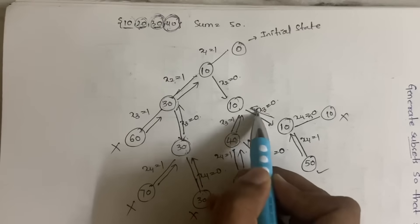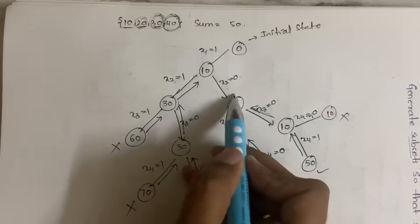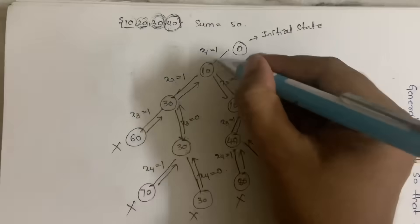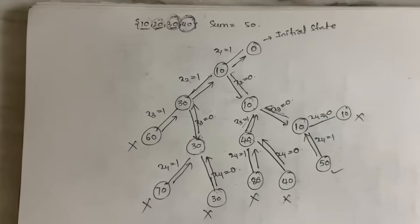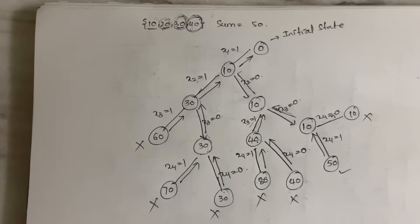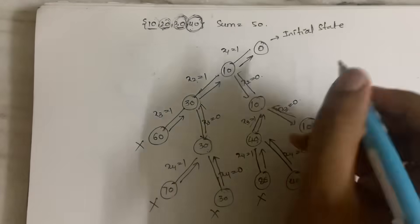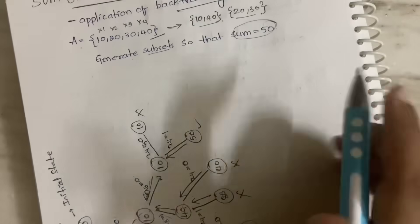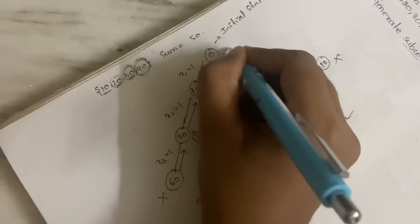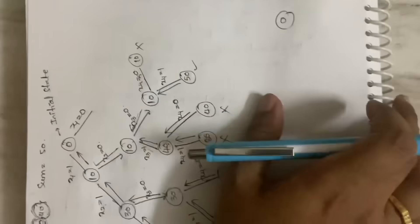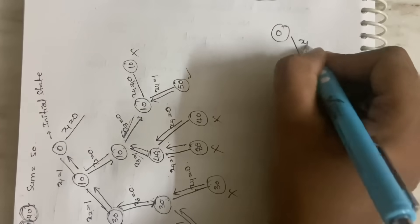Go back to the root node. Both conditions at each node along the way have already been checked, so you keep going back until you reach the root. From the root node, x1=1 is already checked. The next scenario is x1=0, meaning you are not considering the first element, so you get 0.